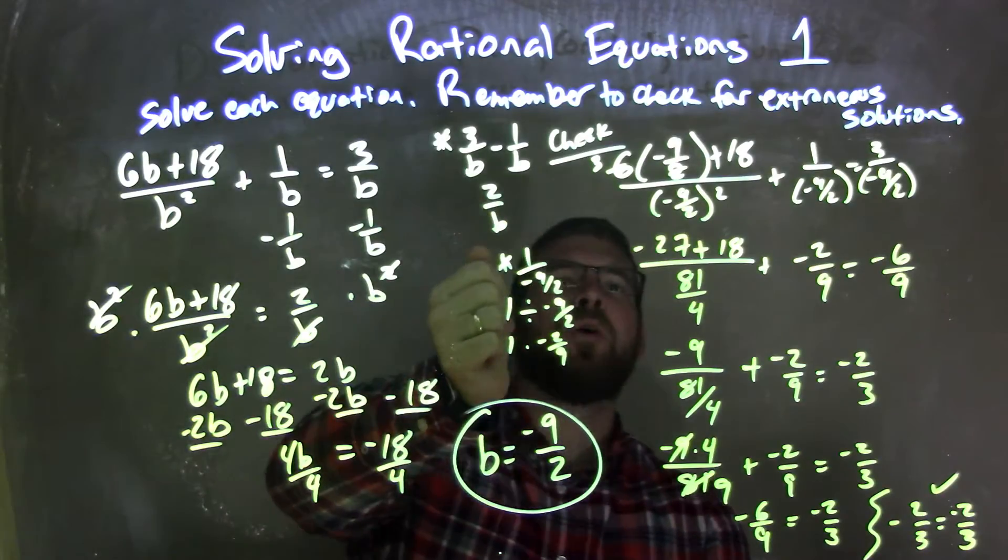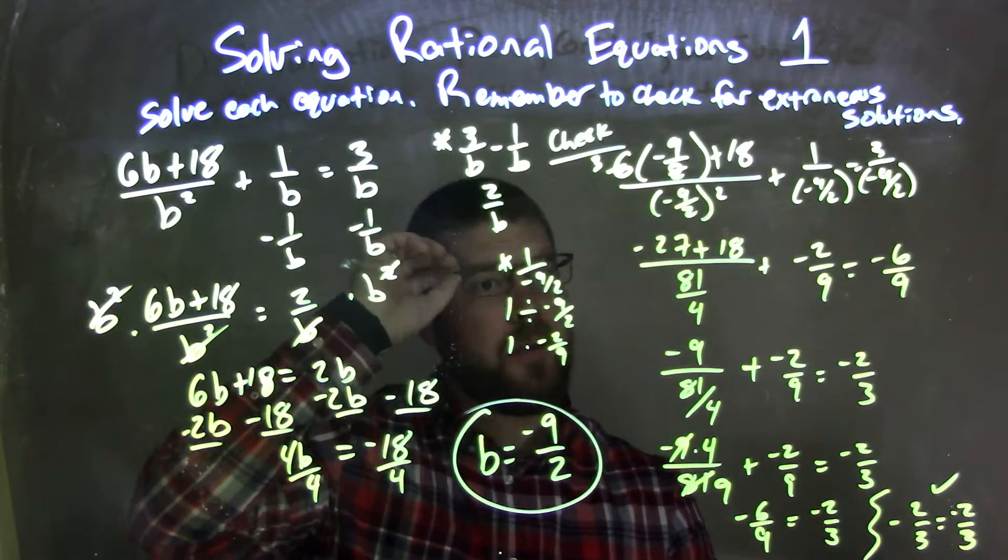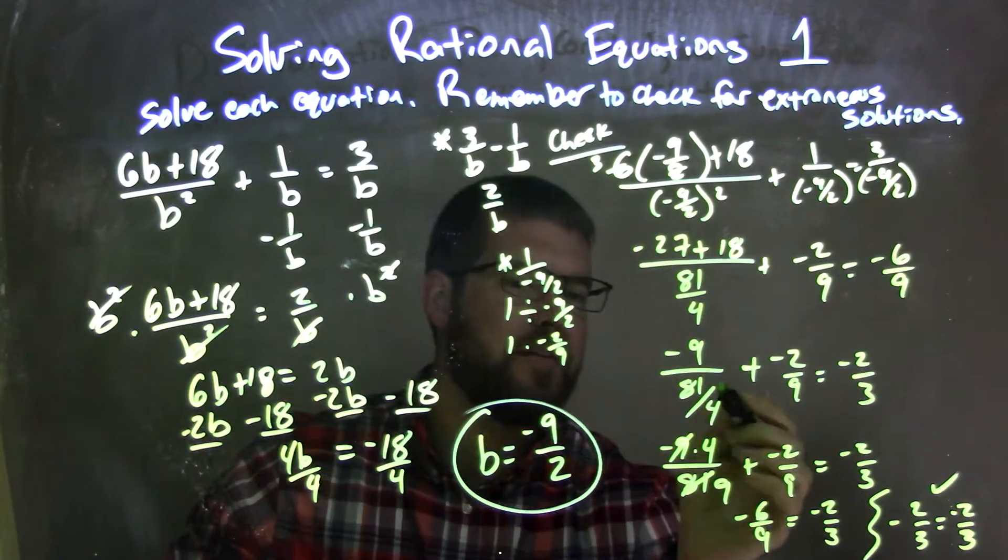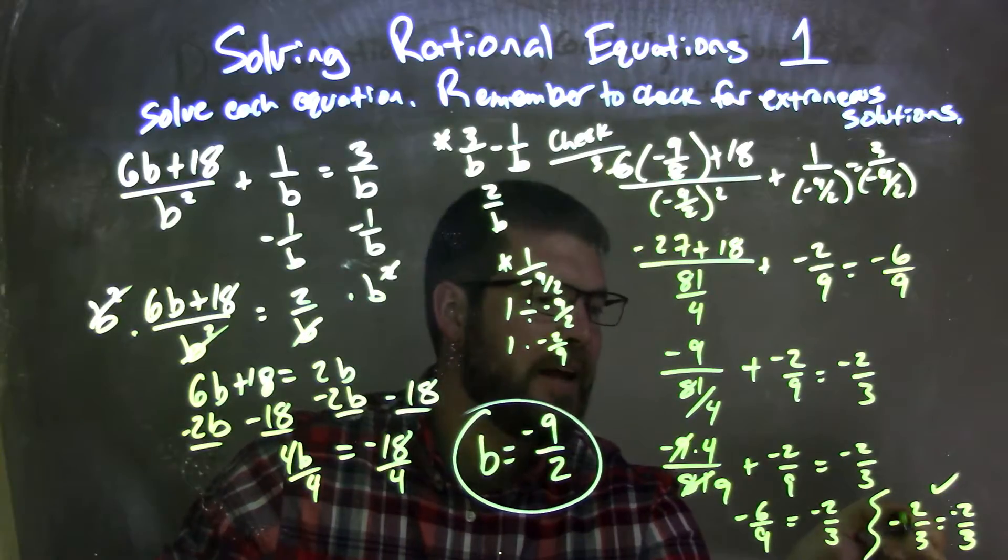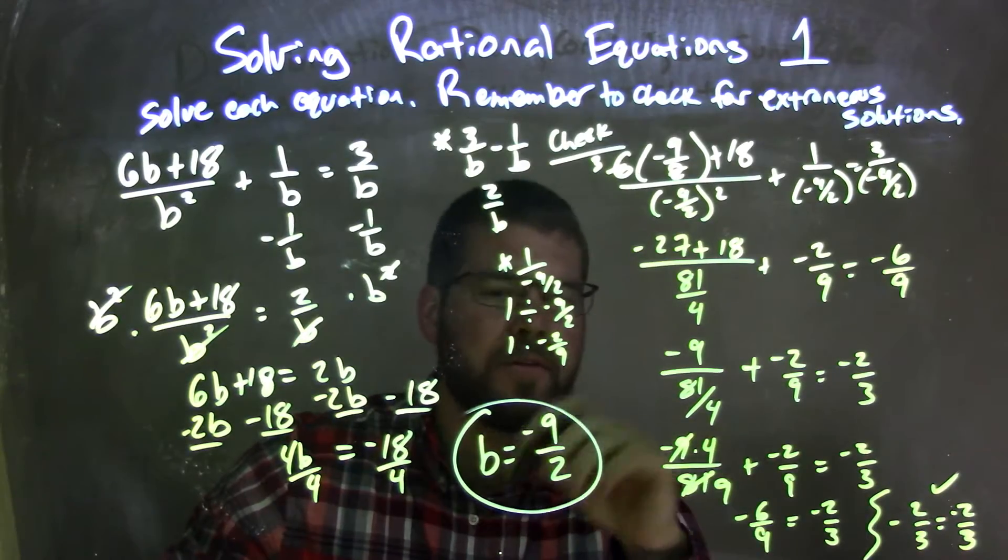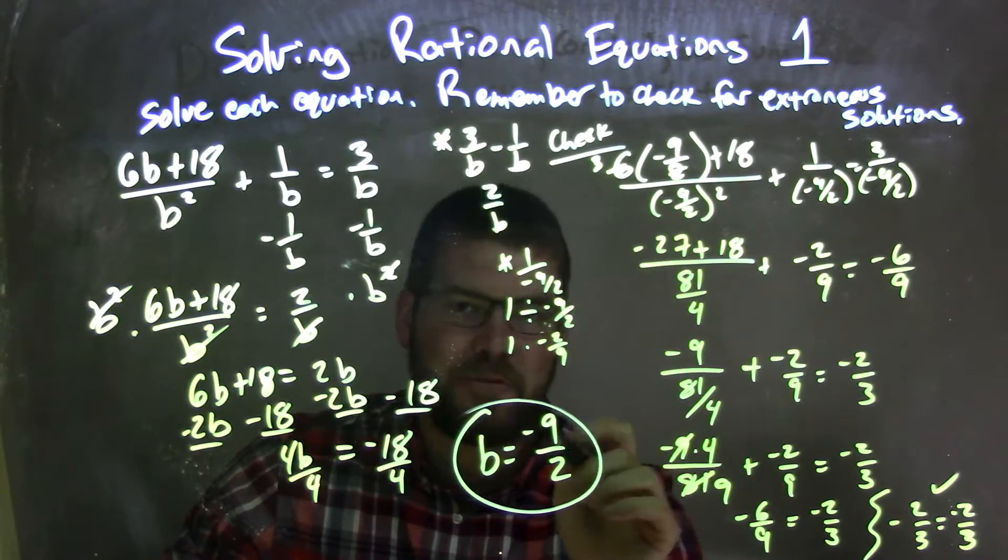Then I check my work, I put negative 9 halves into my equation, and I solved, or simplified. And when I simplified, eventually using all this fancy fractional work and stuff, I ended up on the left and right-hand side being equal, being negative 2 thirds does equal negative 2 thirds. Fantastic, I confirmed my final answer, which is b equals negative 9 halves. So let's break guys.